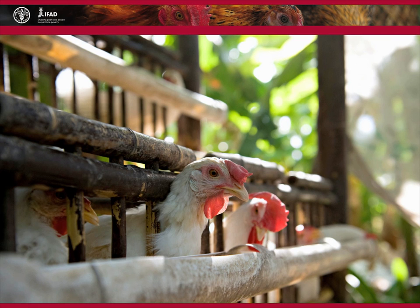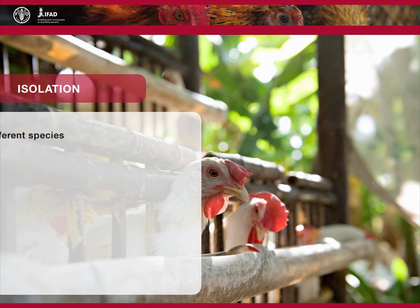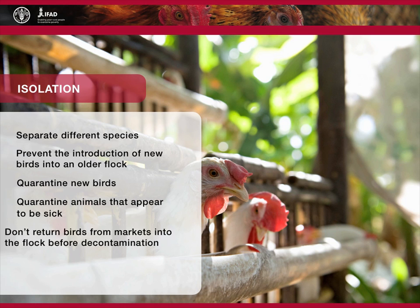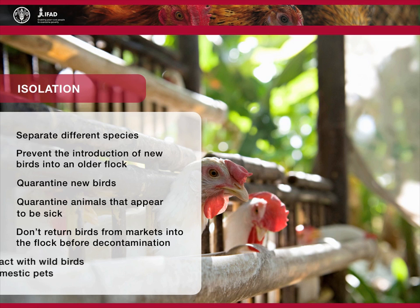The first step to keeping a flock free of infectious disease is to ensure that the poultry and homestead are isolated from sources of infection. To ensure this, take the following steps: separate different species; prevent the introduction of new birds from live bird markets or neighbours into an older flock; quarantine new birds for a period of time before allowing them to join an older flock; quarantine animals that appear to be sick; do not reintegrate birds that have been to market back into the flock before decontamination; and prevent contact with wild birds and other domestic pets to mitigate the possibility of cross-species contamination.